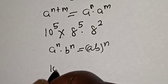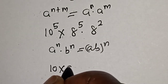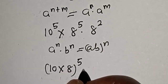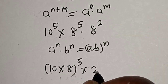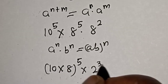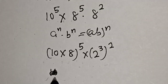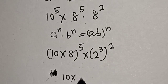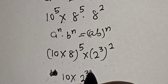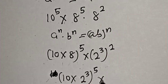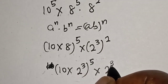This becomes 10 multiplied by 8 raised to power 5, then multiplied by 2 raised to power 3 raised to power 2. This is because 8 equals 2 raised to power 3. So we have 10 times 2 raised to power 3, all raised to power 5, multiplied by 2 raised to power 3 raised to power 2.